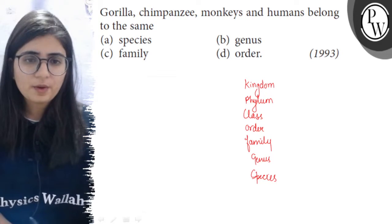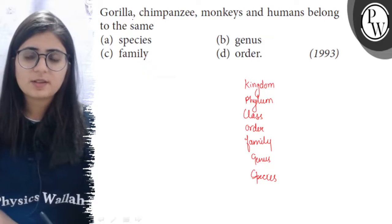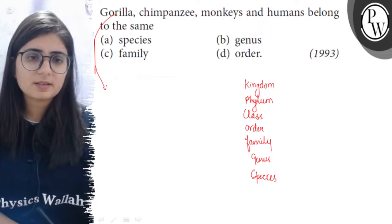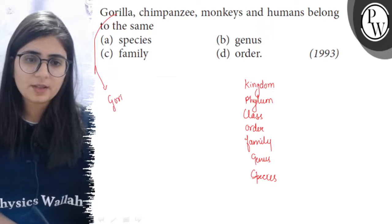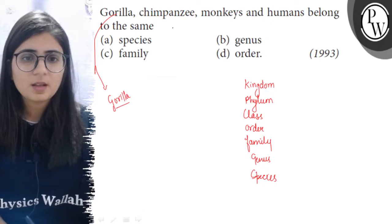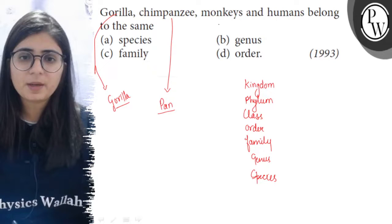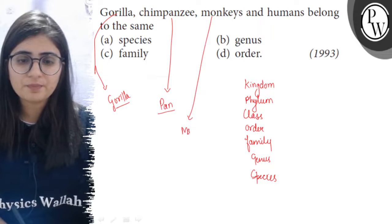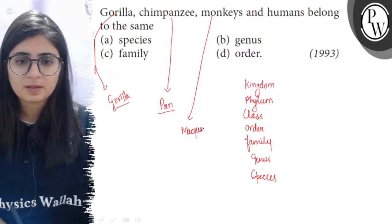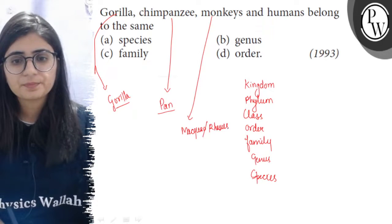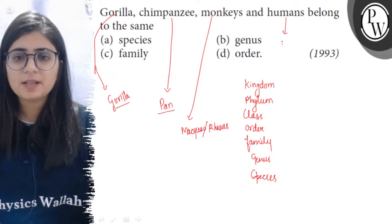Looking at the options now, first Gorilla - the scientific name is Gorilla and the genus is Gorilla. For chimpanzee, the genus is Pan. For monkeys, it is Macaca or Rhesus. For human beings, it is Homo.